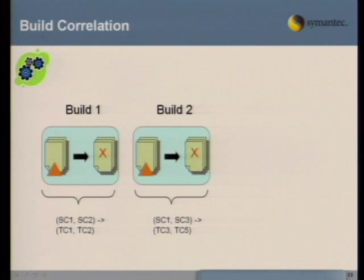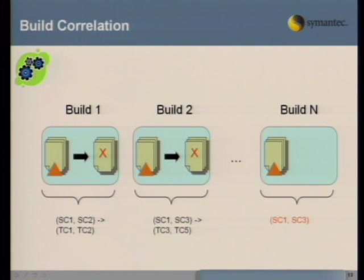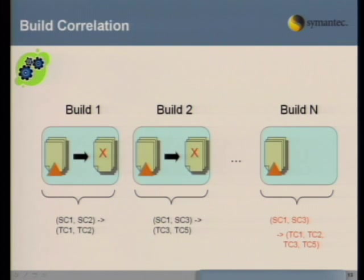Source code 1 and 3 are associated with test case failures 3 and 5. Later on, at build N, you have source code checked in, and hopefully by now you have enough historical data to make intelligent predictions. You can say: it looks like we should probably be running these four tests that have failed in the past — source code 1 failed in both cases for those four tests, source code 3 failed in one case. Hence, the set of test cases can be selected intelligently.